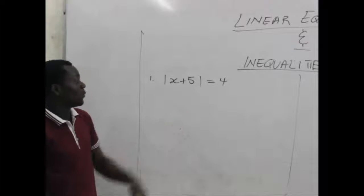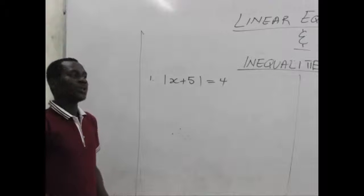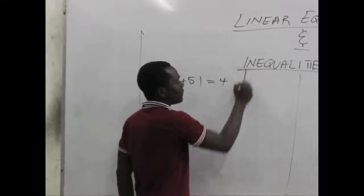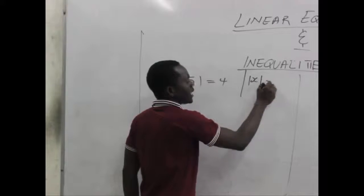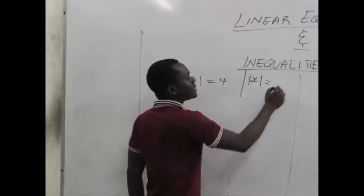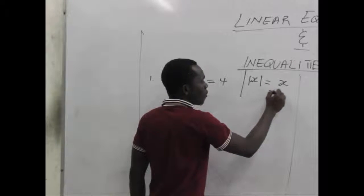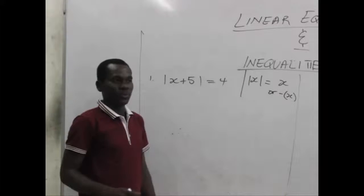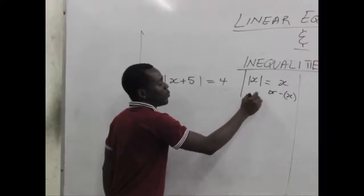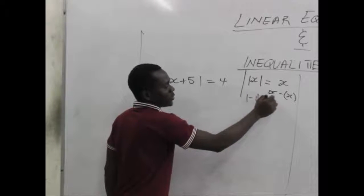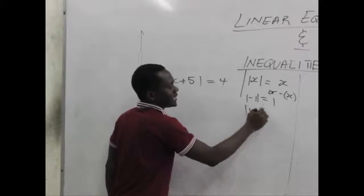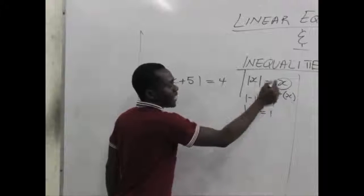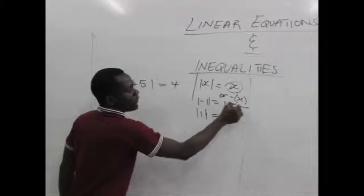The first thing we do is remember that when we have an absolute value, the absolute value of x is actually x or minus x. For example, if we have minus 1, the answer will still be 1. If we have 1, the answer is still 1. So x may be either a positive value or a negative value.